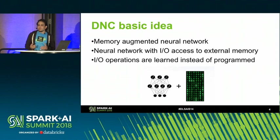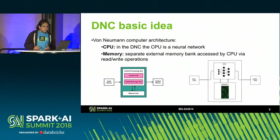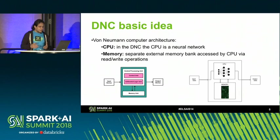This means that we don't specify how to access the memory — it's up to the neural network to learn. Let's think about the main computing architecture of today's computing: it's called the von Neumann architecture. If we think about the von Neumann architecture, there are basically two main components: a CPU and a memory, and of course memory access subsystems.